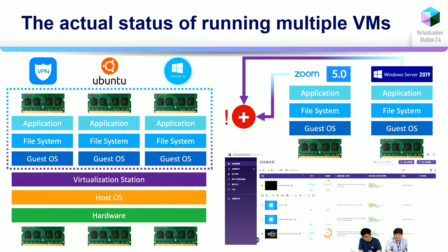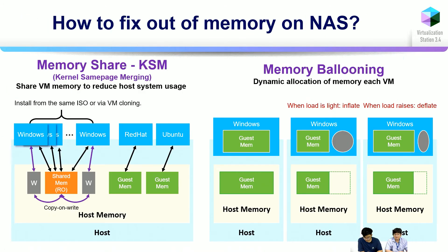The actual status of running multiple VMs — we can see this photo. There are three memory modules, each with 4 gigabytes, so totally 12 gigabytes. I temporarily want to run two VMs in my system — one is Server 2019 — but I cannot do it because it's out of memory. How to fix out of memory on NAS? There are two solutions: the first is memory sharing, meaning KSM, which shares VM memory to reduce host system usage.